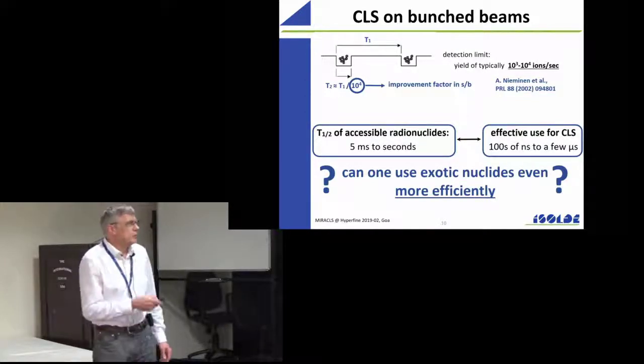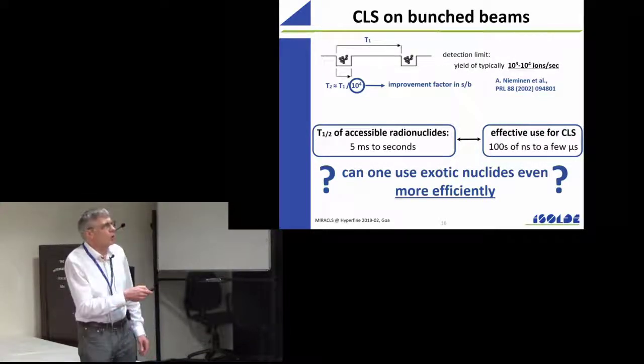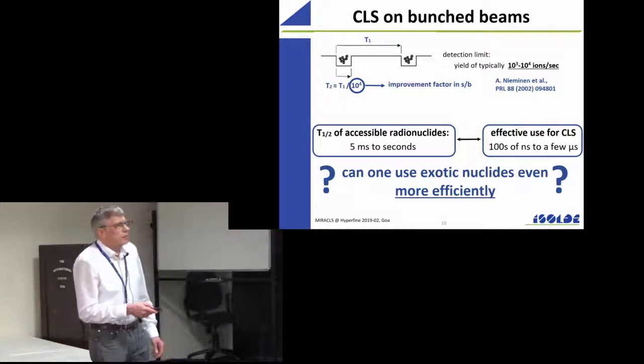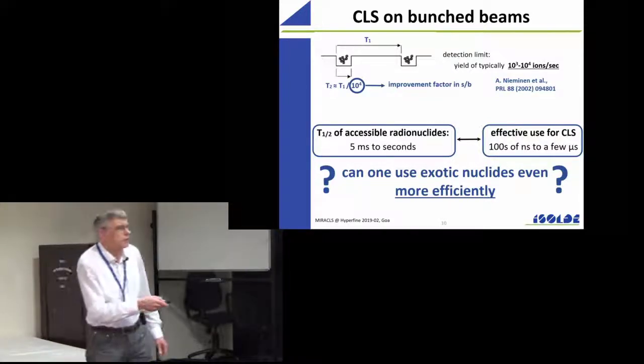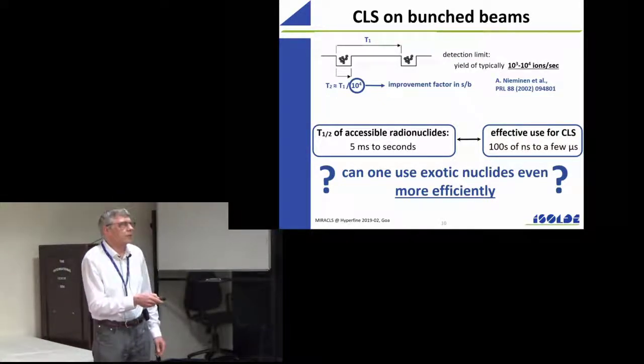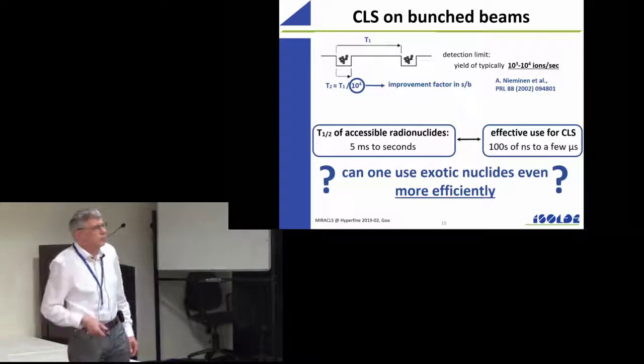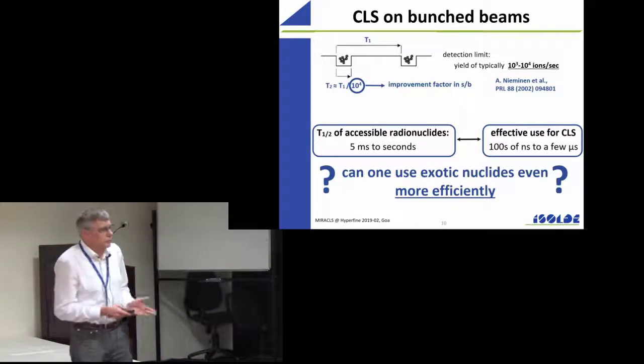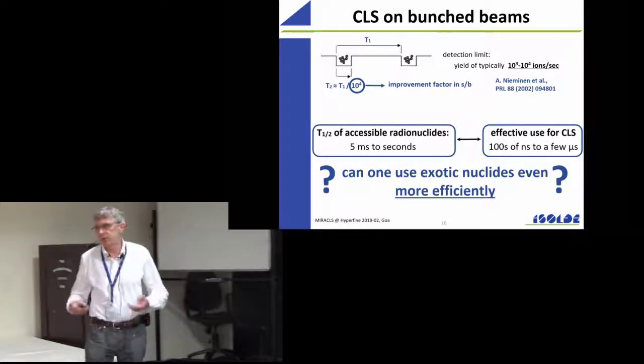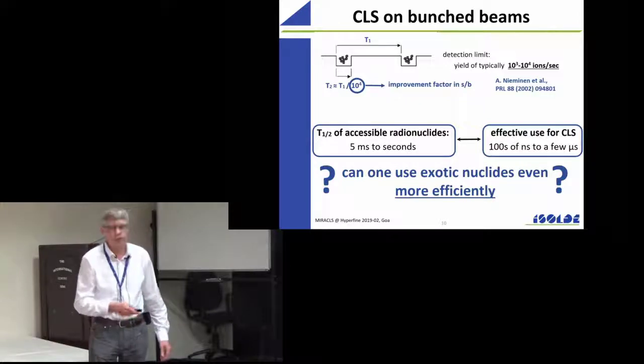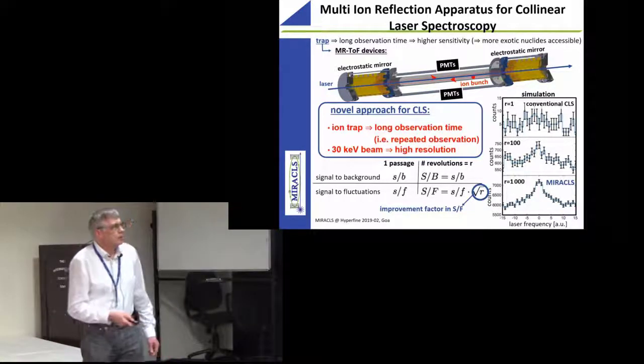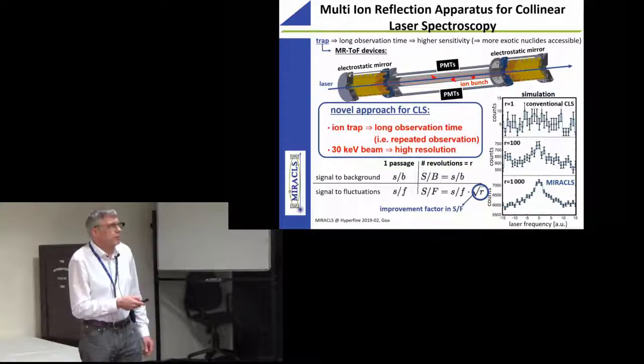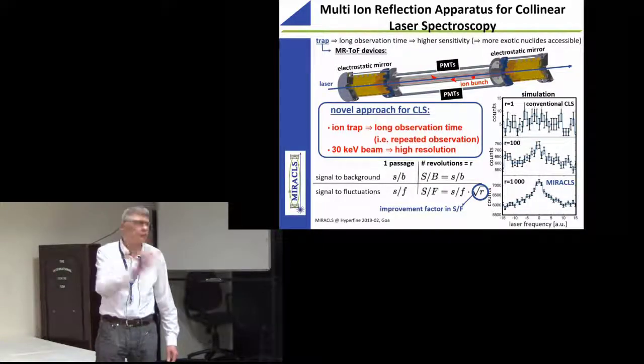That means you do an accumulation for several milliseconds, and then you only do the experiments on the ions for something on the order of a few microseconds or even less, just hundreds of nanoseconds to a few microseconds. So the idea, how can you do this more efficiently? You go back and forth and do the measurement all the time that you have while you are collecting the new sample. You get longer observation time, or repeated many times this observation with the same ions instead of going through just once and dumping them.